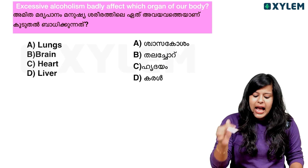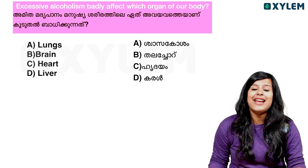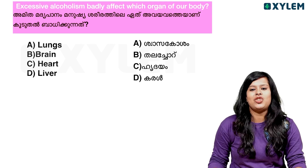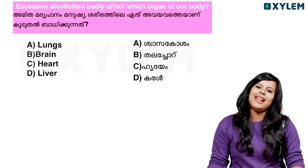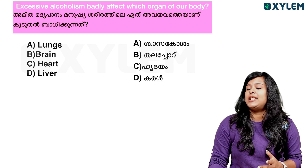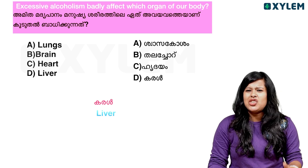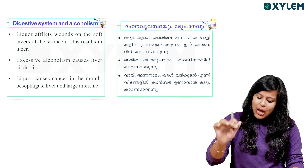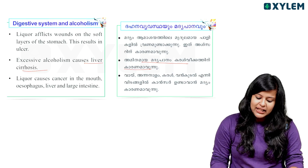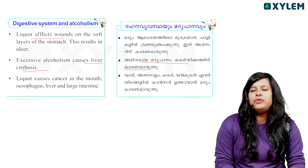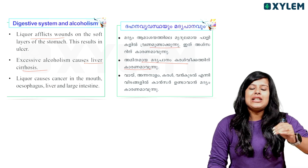Next question: Excessive alcoholism badly affects which organ of our body? Options: Liver, Heart, Brain, Lungs. The answer is Liver. Excessive alcohol is a cause of liver cirrhosis. That will reflect wounds on the soft layer of the stomach and it can lead to cancer.